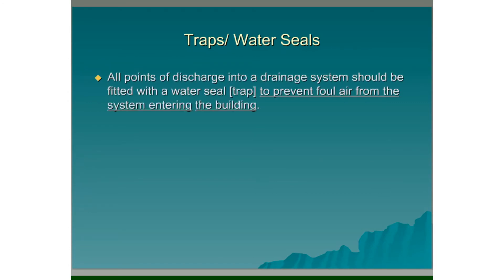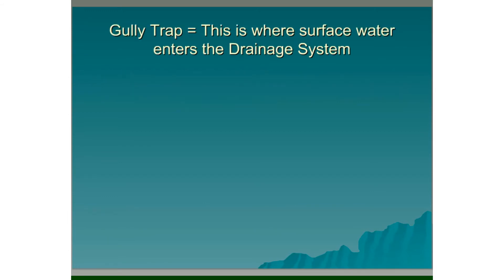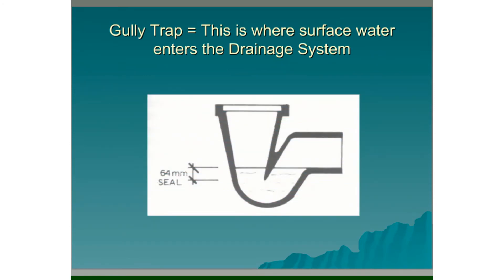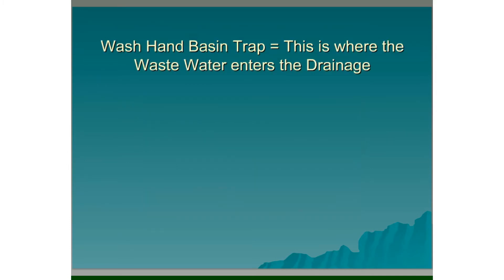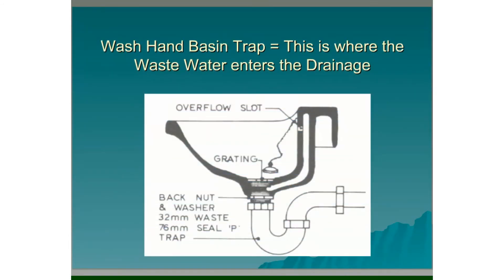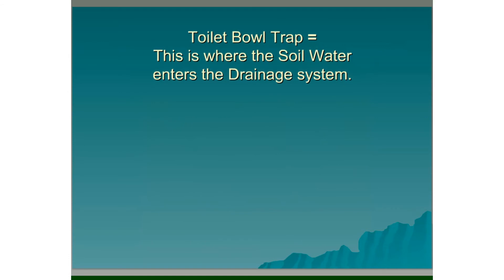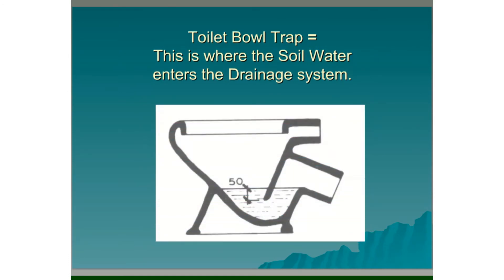Traps and water seals. All points of discharge into a drainage system should be fitted with a water seal or a trap. This is to prevent foul air from the system entering the building. A gully trap is where surface water enters the drainage system — a gully trap is essentially a standard gully. A wash hand basin trap is where waste water enters the drainage system. A toilet bowl trap is where soil water enters the drainage system.